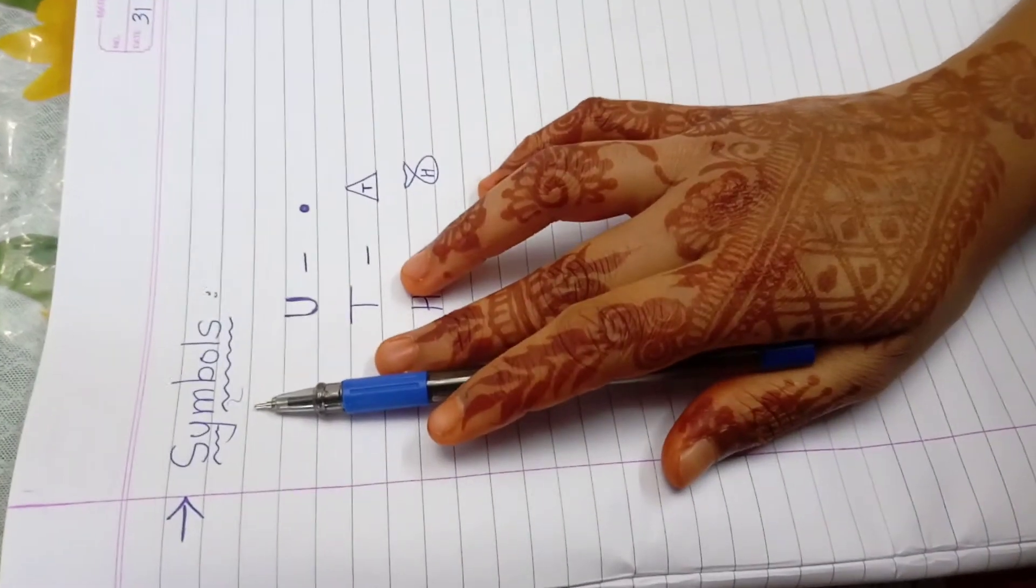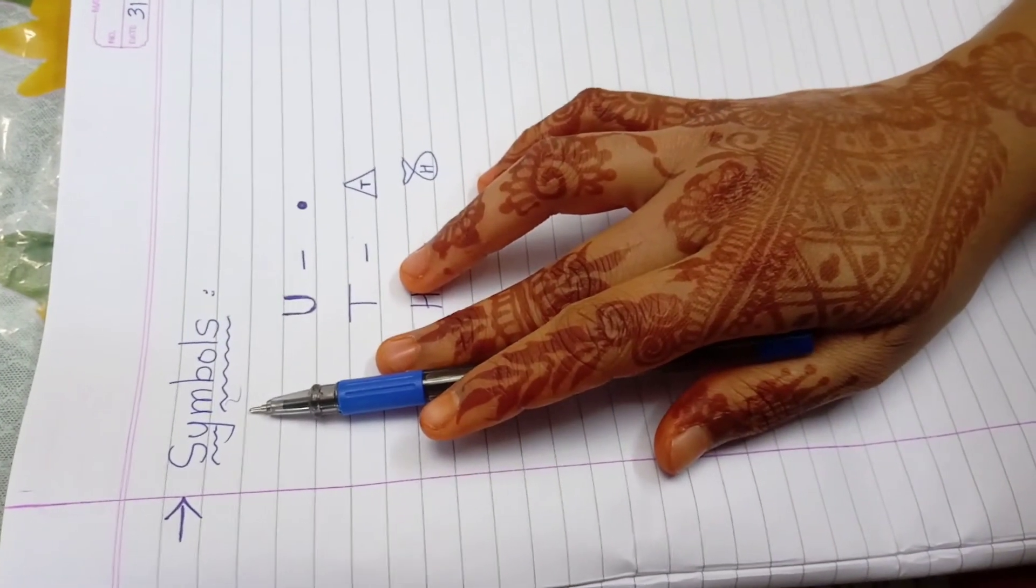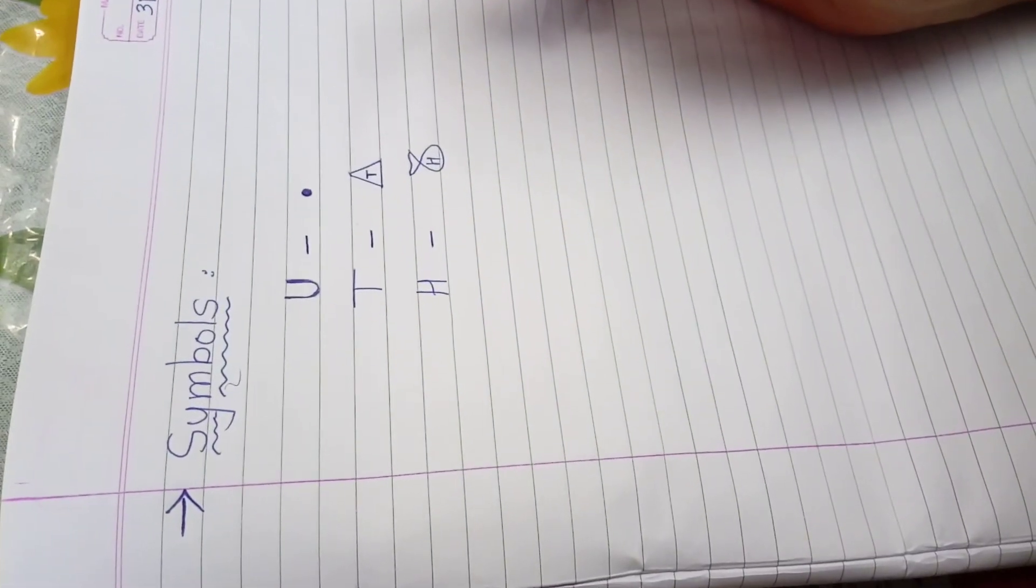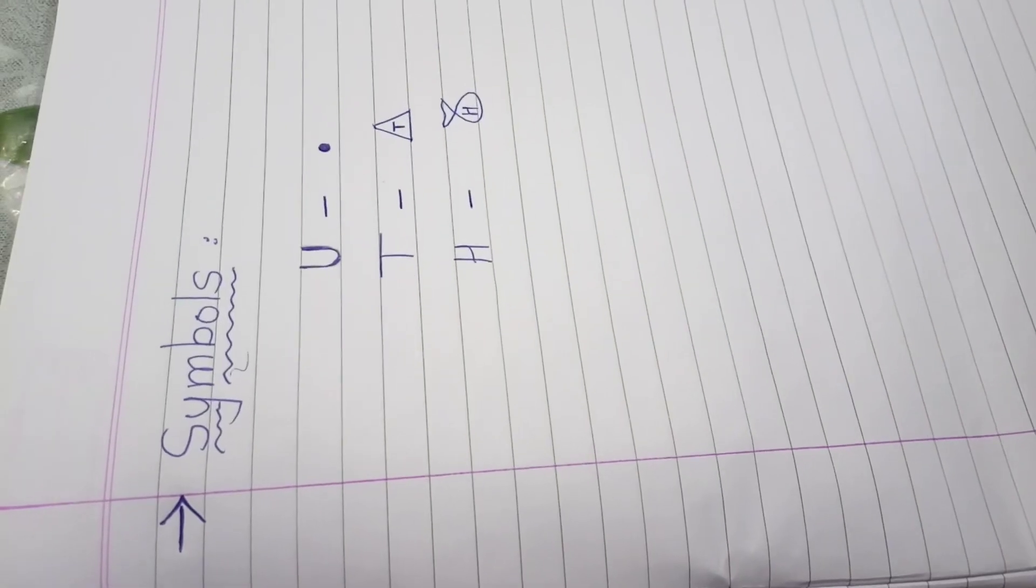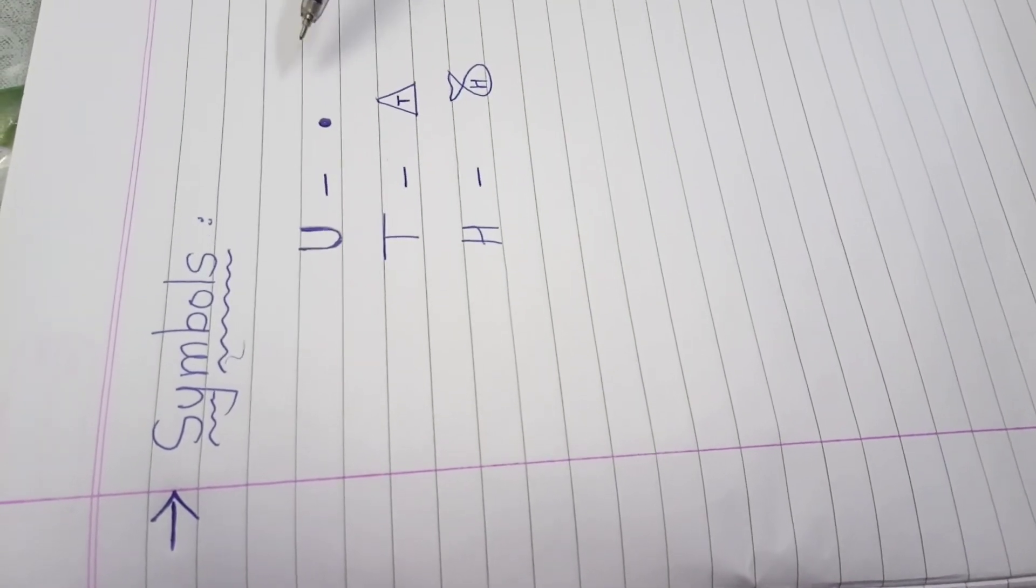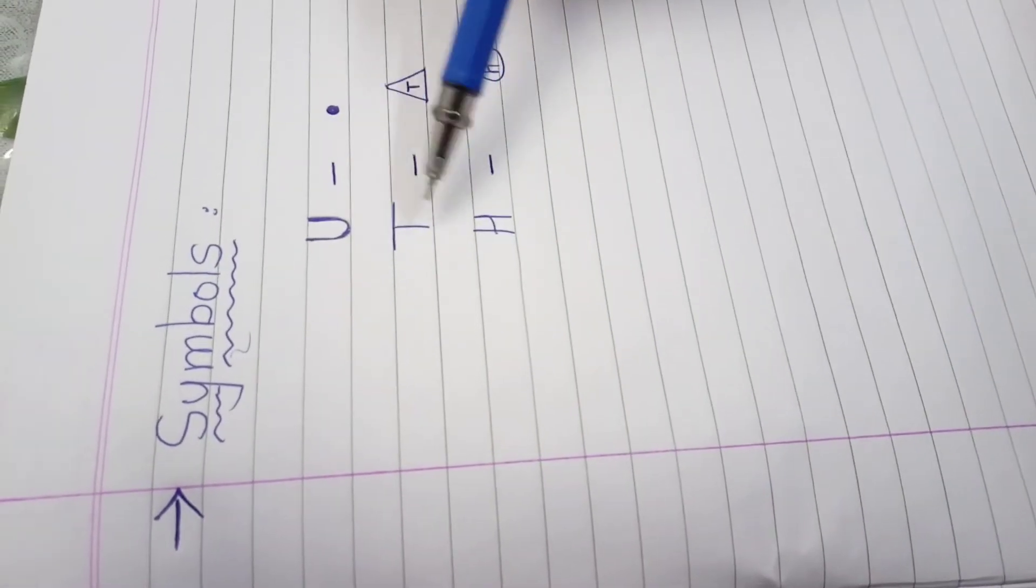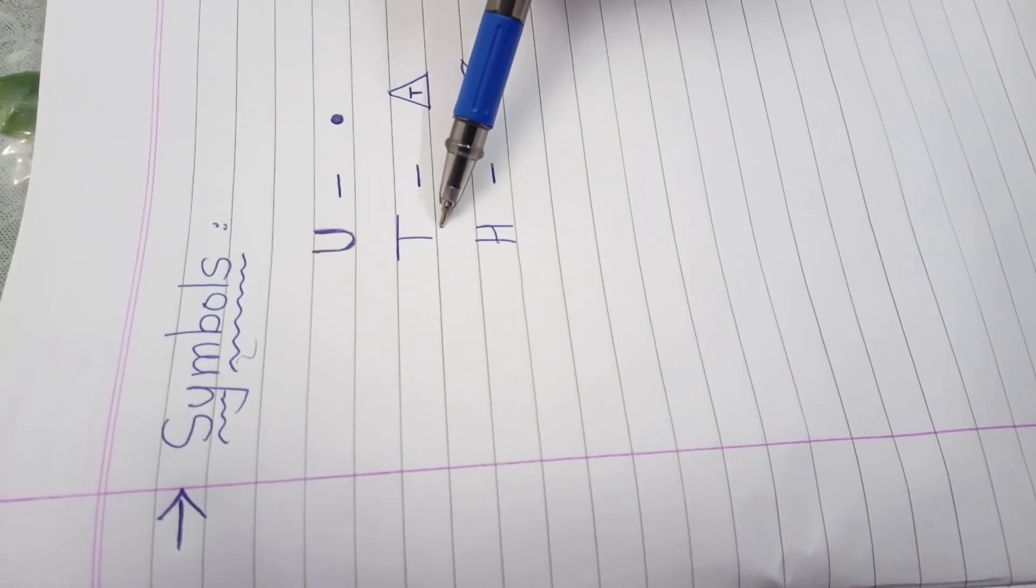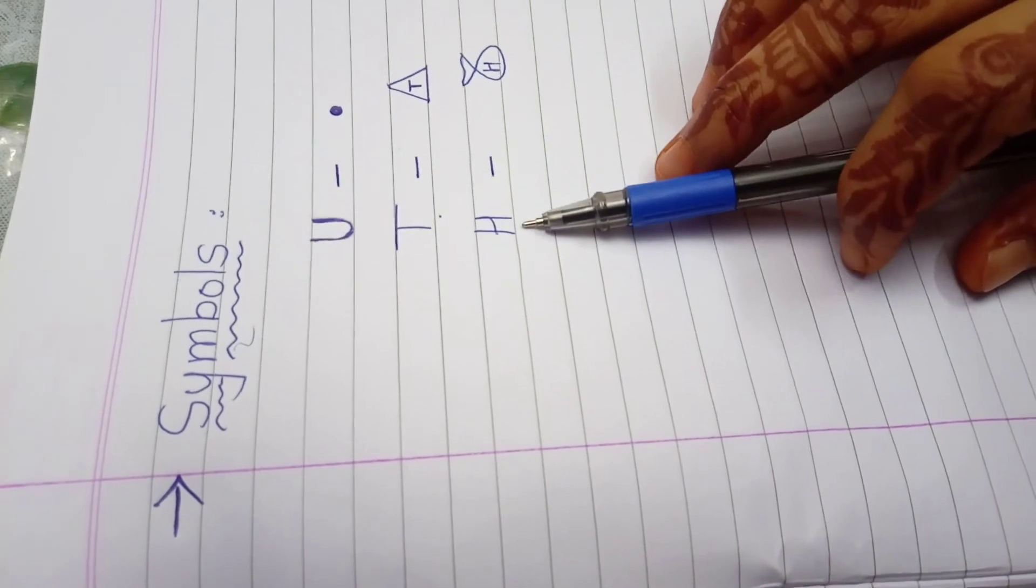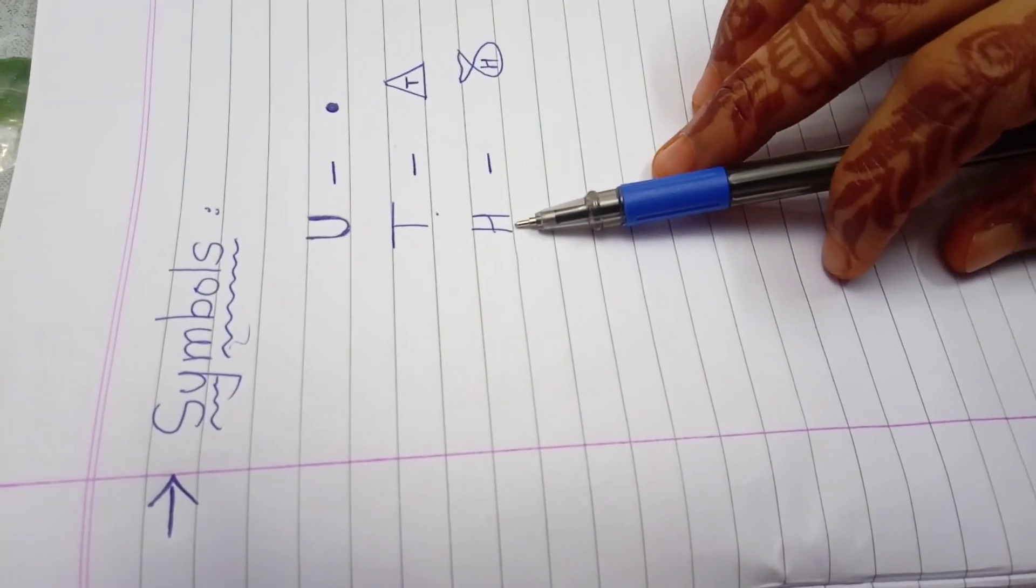Now next is symbols. Okay. So you know, each number have unit place for 1 digit number. Okay. Then for 2 digit number, the place values are unit and tens. Okay. And if the 3 digit number is there, then we will use here H. H means 100. Okay. Understand?